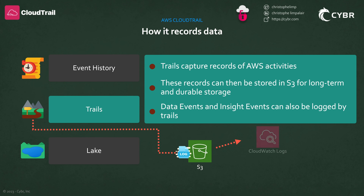You can create an Amazon S3 bucket, specify that bucket when you create a new trail, and the service will automatically deliver logs to that bucket. On top of that, you can optionally send logs to CloudWatch Logs by creating a log group, and you can also create Amazon EventBridge rules that use information from CloudTrail. While you don't get charged by AWS for storing one copy of ongoing management events to an S3 bucket, you do get charged the S3 storage charges, which are quite minimal, but that is important to keep in mind.